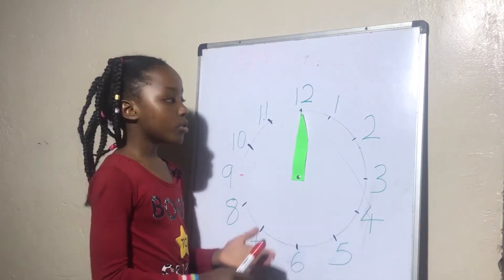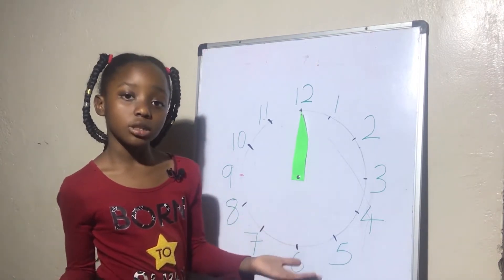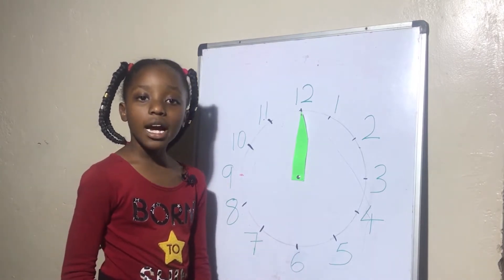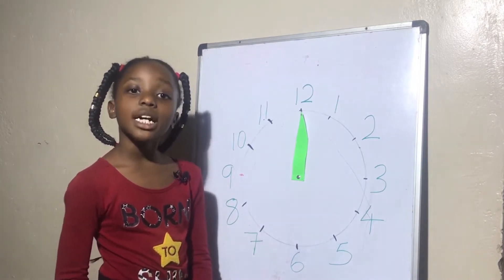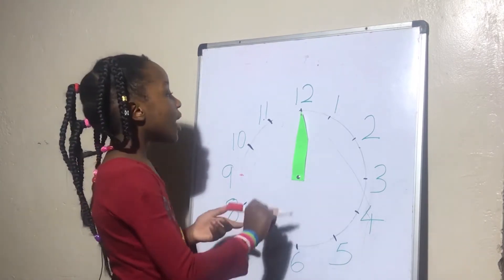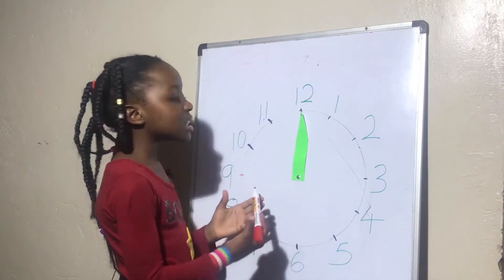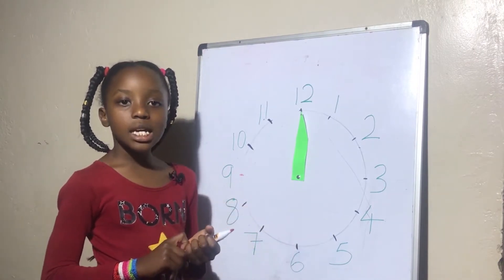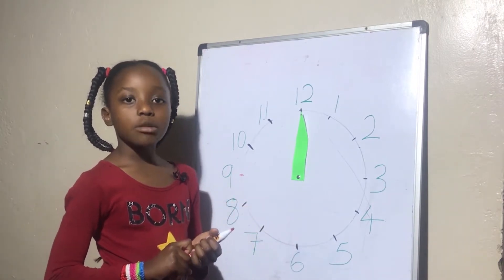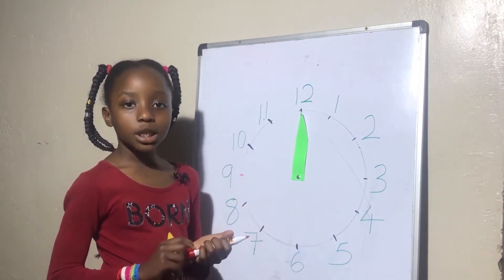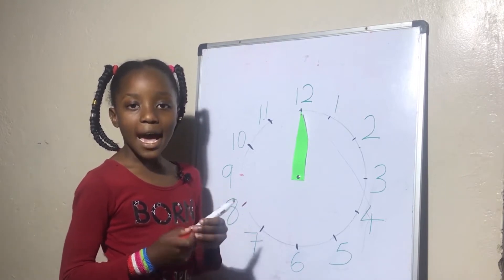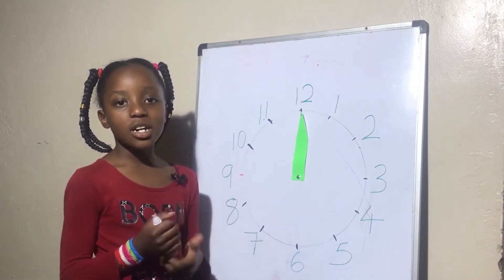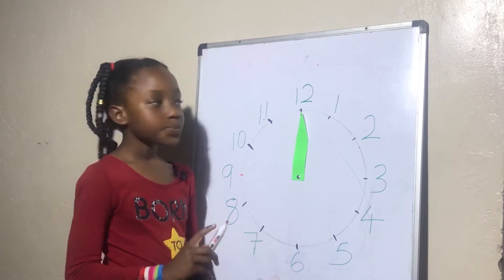Now we've been talking a lot about the short hand. What about the long hand? It's important too. The long hand tells us about the minutes, and the short hand tells us about the hours. But remember, we have a third hand on an analog clock.